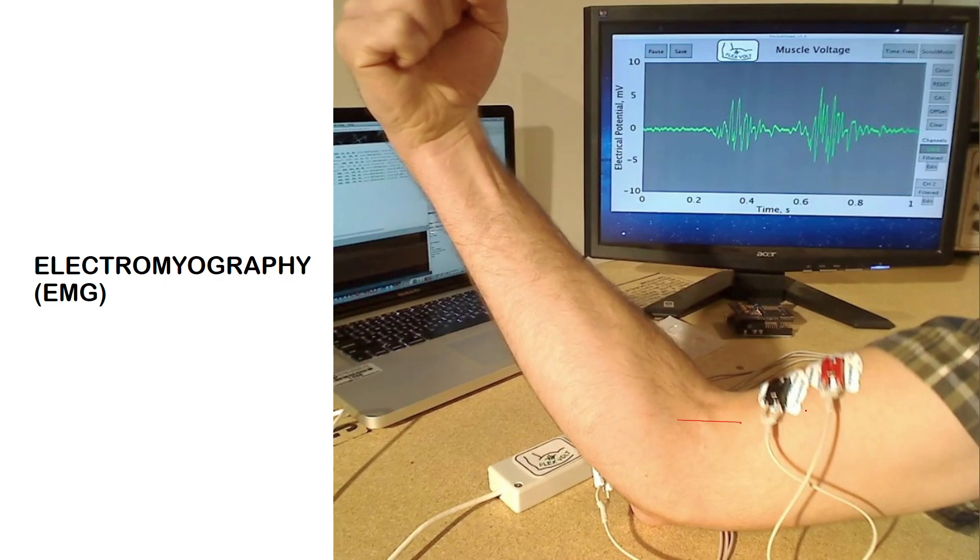The electrical signal produced during muscle activation is known as a myoelectric signal. In this case, it is produced from small electrical currents generated by the exchange of ions across the muscle membranes and detected with the help of electrodes such as these electrodes that you can see here in this picture.